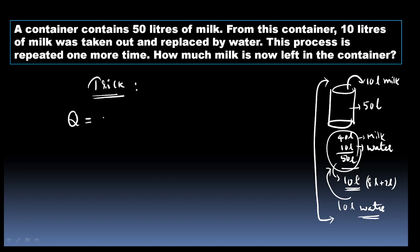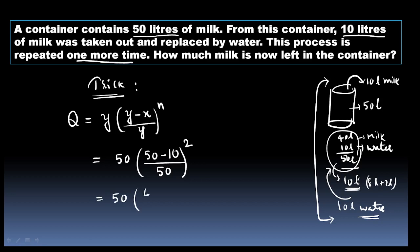Quantity of milk left at last - we will use the formula: total liquid Y into Y minus X divided by Y, whole power n. Using this formula, Y is 50 liters total solution, X is 10 liters removed, divided by Y whole power n. So this is 50 into 50 minus 10, which is 40 divided by 50 whole power 2.